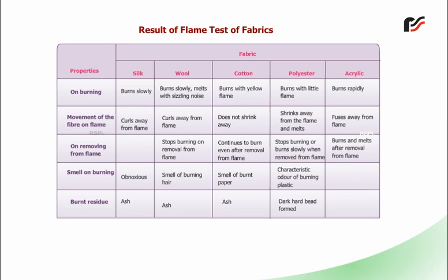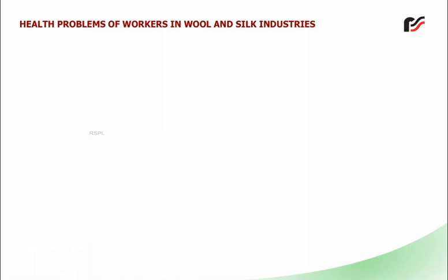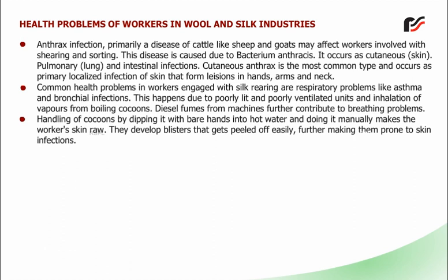Health problems of workers in wool and silk industries: anthrax infection, primarily a disease of cattle like sheep and goats, may affect workers involved with shearing and sorting. This disease is caused by the bacterium Bacillus anthracis. It occurs as cutaneous (skin), pulmonary (lung), and intestinal infections. Cutaneous anthrax is the most common type and occurs as primary localised infections of skin that form lesions in the hands, arms and neck. Common health problems in workers engaged with silk rearing are respiratory problems like asthma and bronchial infections. This happens due to poorly lit and poorly ventilated units and inhalation of vapours from boiling cocoons. Diesel fumes from machines further contribute to breathing problems. Handling of cocoons by dipping them with bare hands into hot water makes the workers' skin raw; they develop blisters that peel off easily, making them prone to skin infections.